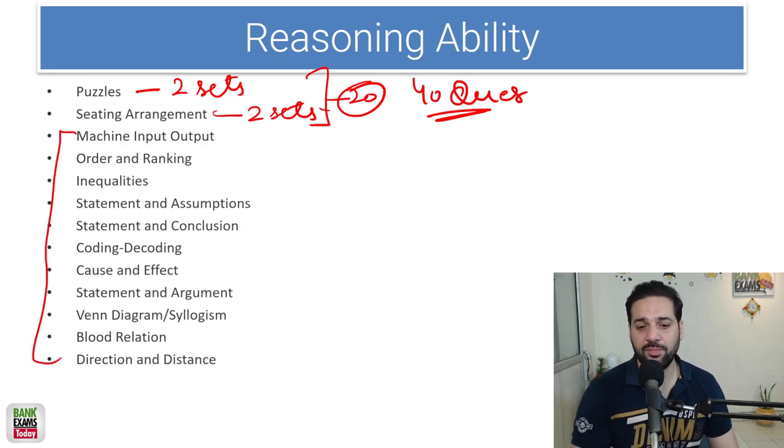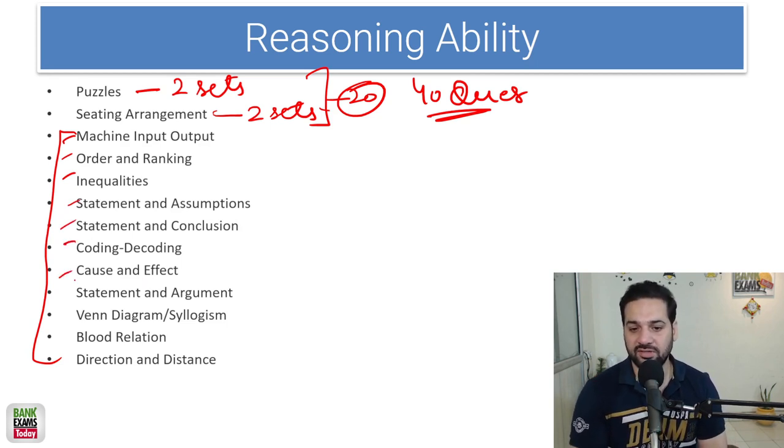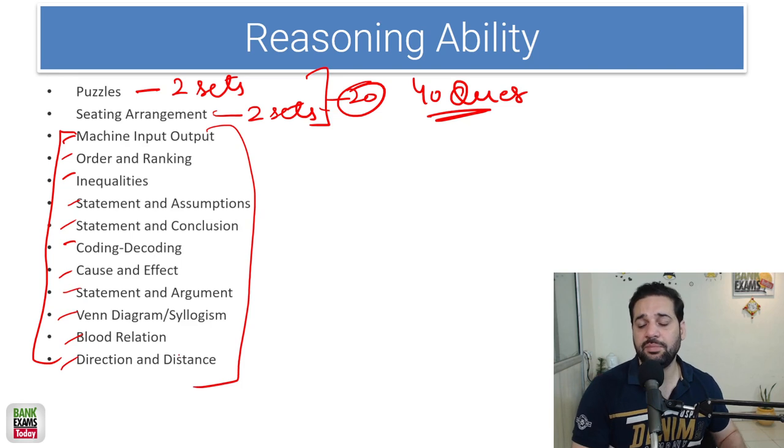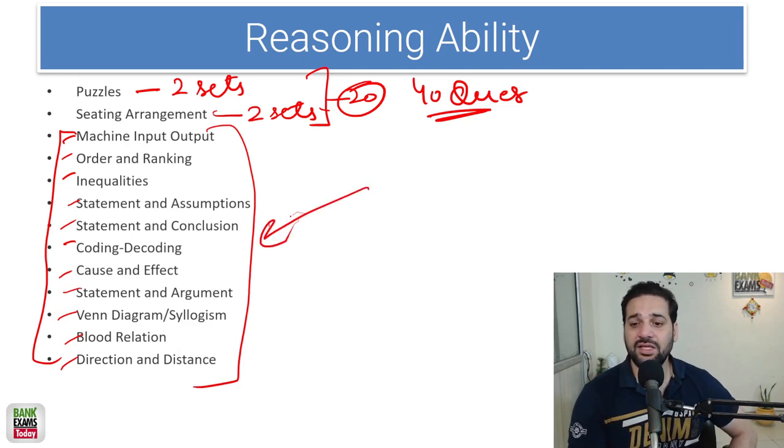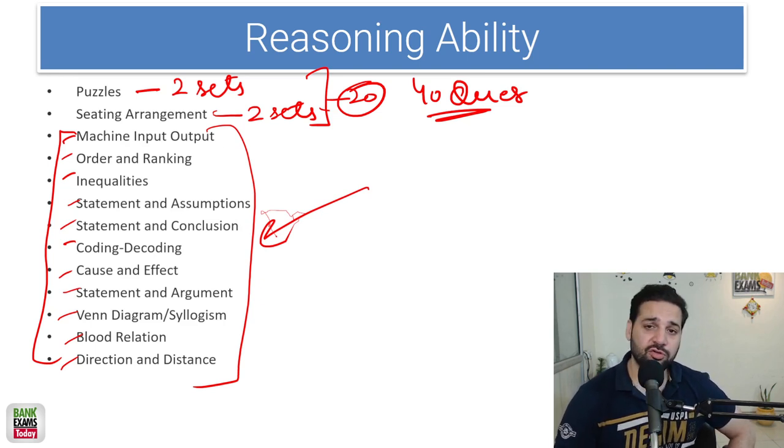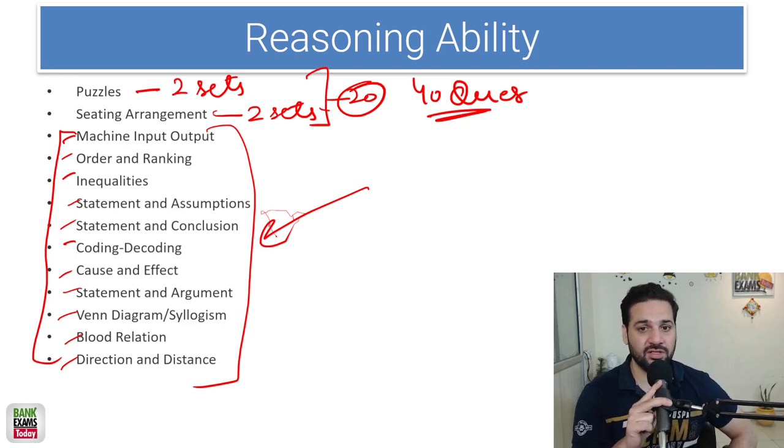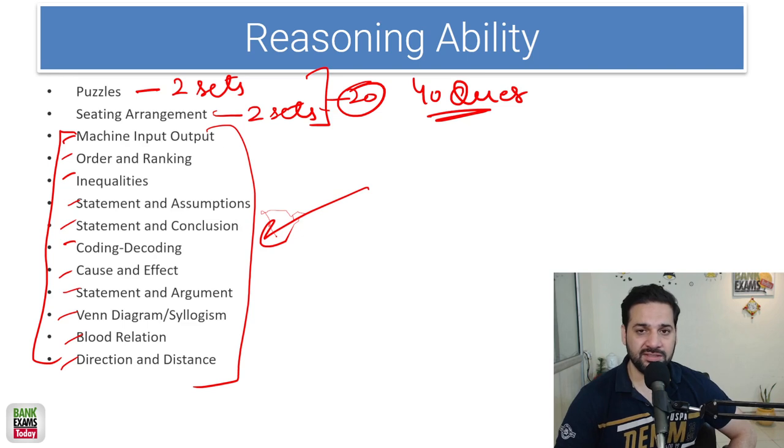From rest of the topics: machine input output, order and ranking, inequality, statement and assumptions, statement and conclusion, coding decoding, cause and effect, statement and argument, Venn diagram, syllogism, blood relation, direction and distance. Students I'm telling you that these topics are very easy, very scoring.